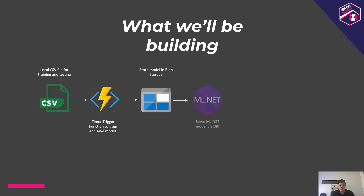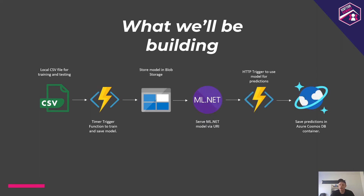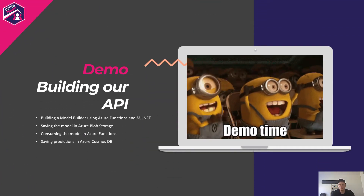In this session we're building a serverless machine learning API that makes predictions on how much a taxi trip might cost. I've got local CSV files for both training and testing the model. I'll create a timer-trigger function in C# that trains and saves the model — simulating a batch processing scenario. The model will be saved to Blob Storage, accessible via URL. An HTTP trigger will load the model into the function application to make predictions on incoming requests, and each prediction will be saved to Azure Cosmos DB.